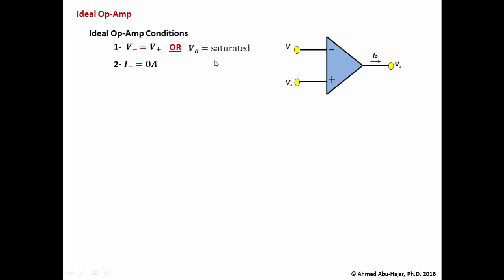The ideal op-amp has zero input current going into the inverting input. The current going into the non-inverting input is also zero amps. So the current going into the op-amp is zero. Keep in mind that the output current of the op-amp can be any value, and the output voltage is independent of the output current.